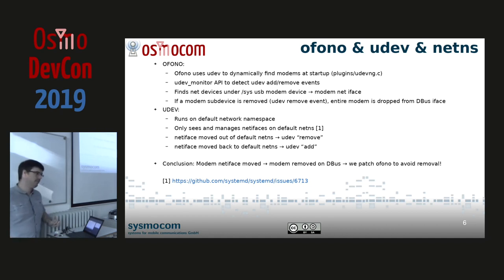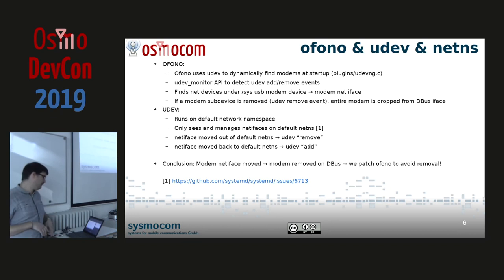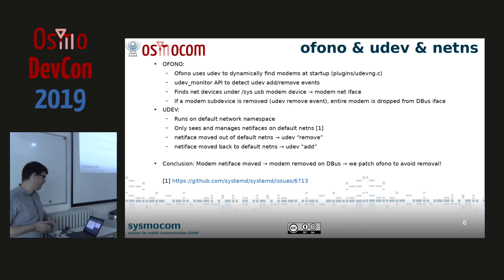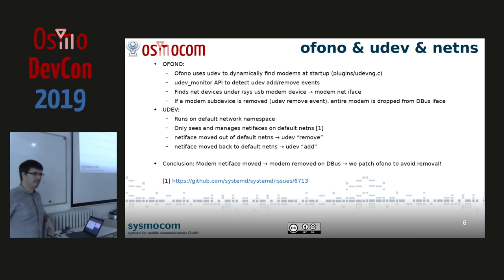Ofono uses udev to find modems. Ofono starts up and checks udev, uses the udev monitor API, has its own internal database, checks what it finds there, does some matches, and from there infers which devices are modems and creates objects for them. At the same time, it takes the device from udev, finds that it has a sub-device of type network, and infers which network interface belongs to that modem — building its own object model.